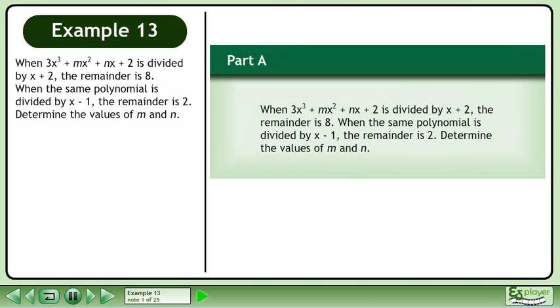When 3x cubed plus mx squared plus nx plus 2 is divided by x plus 2, the remainder is 8. When the same polynomial is divided by x minus 1, the remainder is 2. Determine the values of m and n.